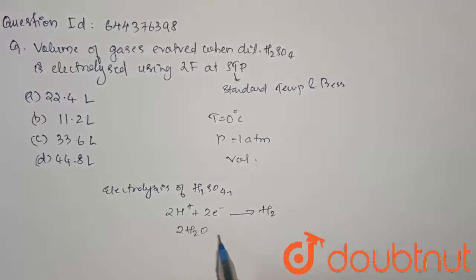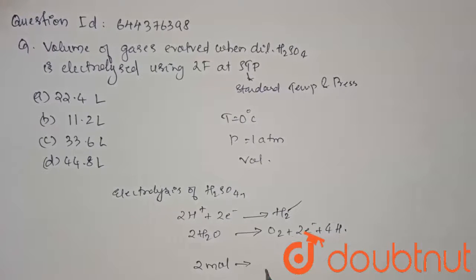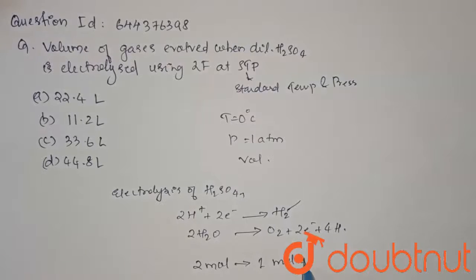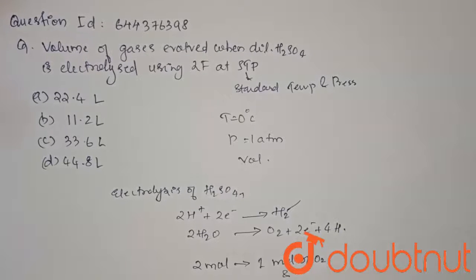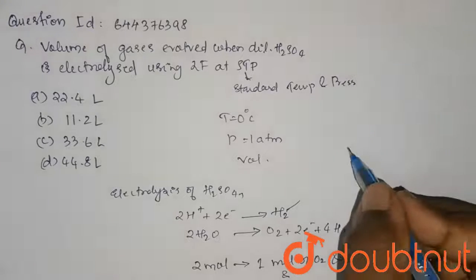2H2O gives O2 plus 2 electrons plus 4H+. So here we have 2 moles of gases, that is 1 mole of oxygen and 1 mole of hydrogen. So for the final answer,